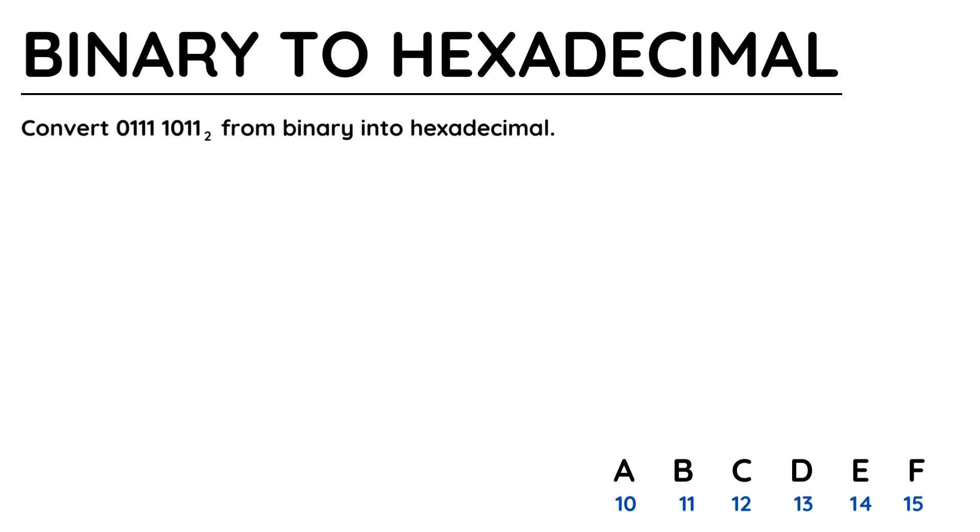Each character in hexadecimal is represented in 4 bits, so looking at this question, 0111 will be represented as one character, and 1011 as another.